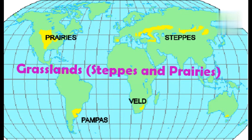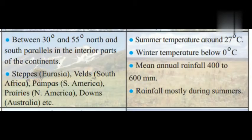Our next point is Grasslands — Steppes and Prairies. In this picture, the yellow color shows the extent of the grasslands of the world. These spread between 30 degree and 55 degree north and south parallels in the interior parts of continents. Steppes in Eurasia, Veldt in South Africa, Pampas in South America, Prairies in North America, and Downs in Australia.